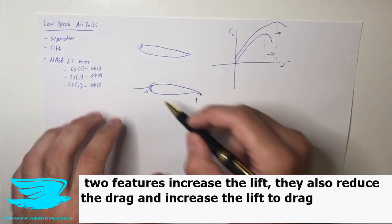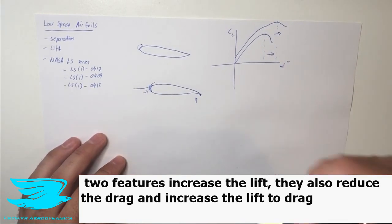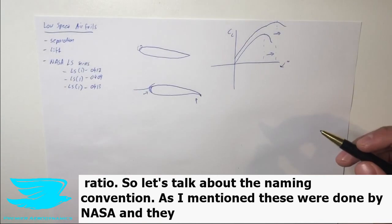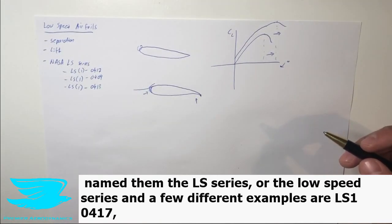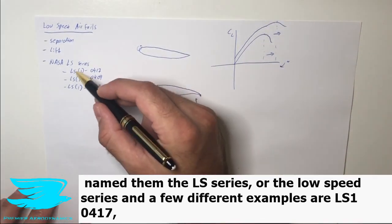So not only do these two features increase the lift, they also reduce the drag and increase the lift to drag ratio. So let's talk about the naming convention. As I mentioned, these were done by NASA and they named them the LS series, so the low speed series, and a few different examples are LS1-0417...